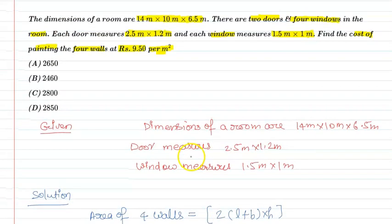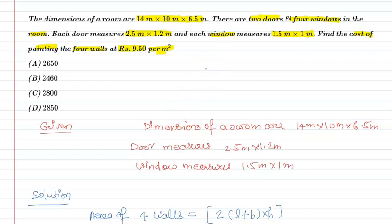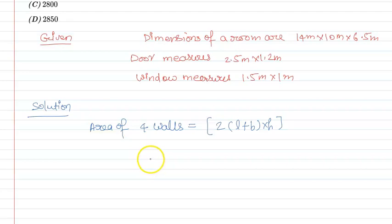जब हम area of 4 walls find करते हैं, तो उसमें doors और windows का area भी included होता है। लेकिन हमें सिर्फ wall को paint करना है, door और window को नहीं। इसलिए total wall area में से area of 2 doors plus area of 4 windows minus कर देंगे — जो बचेगा वो actual wall का area होगा।